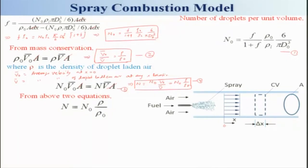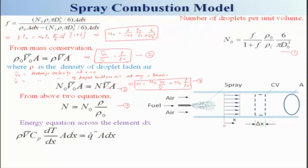Let us combine the above equations. Using equations 2 and 3, and the energy equation across element dx, we can write: ρ·v·c_p·(dT/dx)·A·dx = q̇'''·A·dx. This simplifies by cancellation, and keep in mind that v here is dx/dt — the velocity along the x-direction.